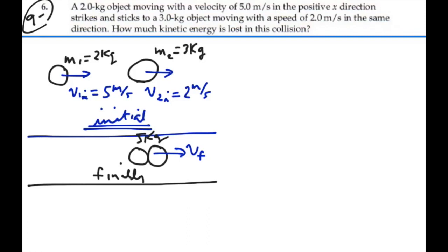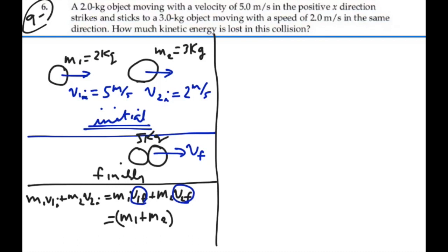Momentum should be conserved, but since it is a perfectly inelastic collision, kinetic energy definitely will not be conserved, so only momentum will be conserved. We have the one equation for momentum: mass 1 v1 initial plus mass 2 v2 initial should equal mass 1 v1 final plus mass 2 v2 final. Since mass 1 and mass 2 stick together, they have the same final velocity, so we can write the right-hand side as mass 1 plus mass 2 times v final.